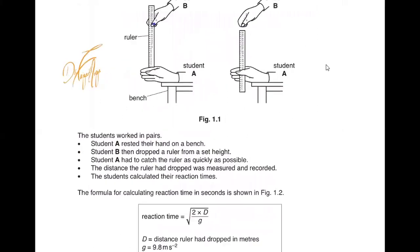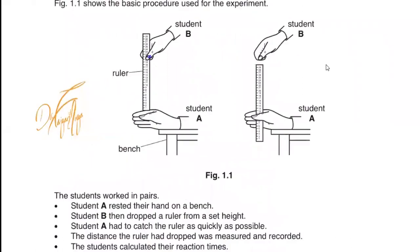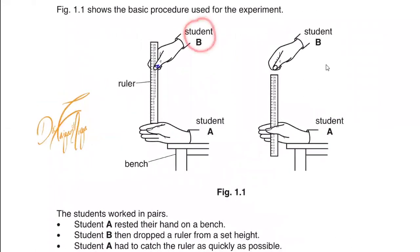The information given in the question is that there are six students who carried out an experiment to determine the reaction time using the ruler. Figure 1.1 shows the basic procedure used for the experiment. There's a student B and there's a student A. Student A has their finger and thumb aligned. Student B is holding the ruler in such a way that the ruler is about to be dropped.